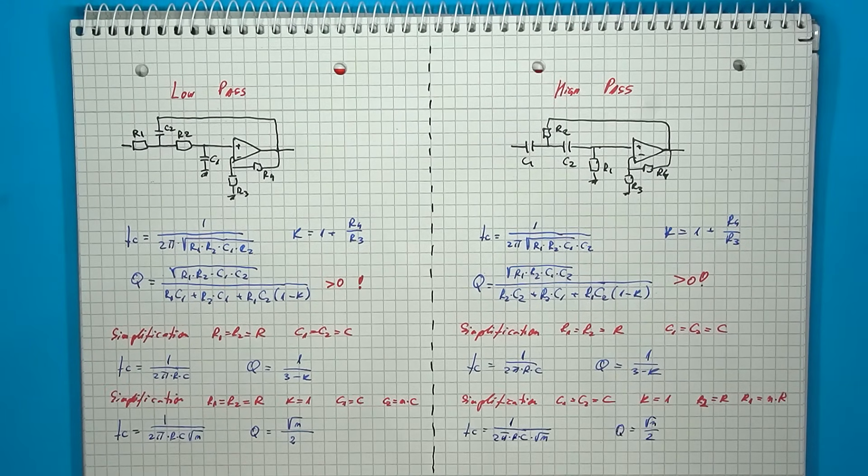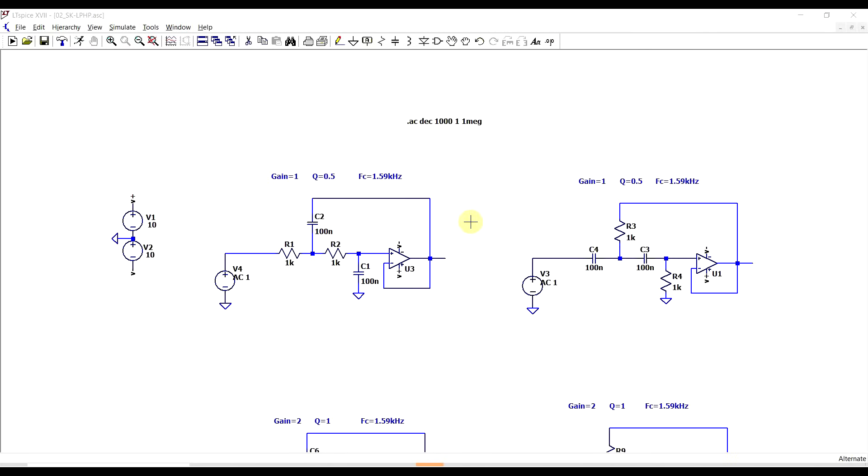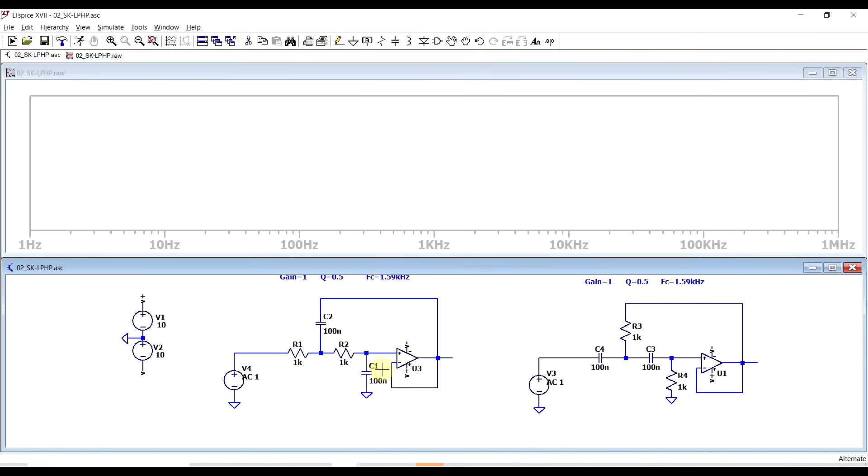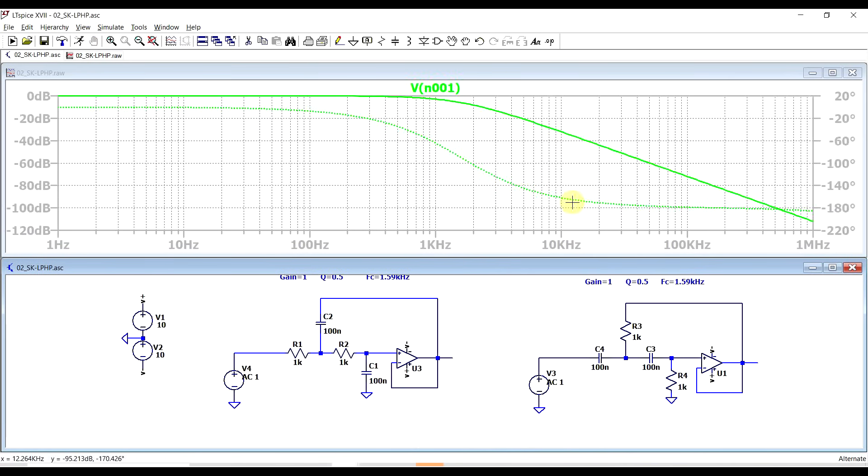Now, another simplification that you can do is set the gain to unity, and change the Q factor only based on the other components, so the exact resistor or capacitor ratio. Now, we can try out these circuits in the simulator, so the initial circuit to look at has unity gain, there's no resistors around the op-amp, and the components have equal values, so the capacitors and the resistors are equal, giving us a Q factor of 0.5. And with these components, we get the corner frequency of 1.59 kHz. So if we look at the response of the circuit, we get a specific curve.